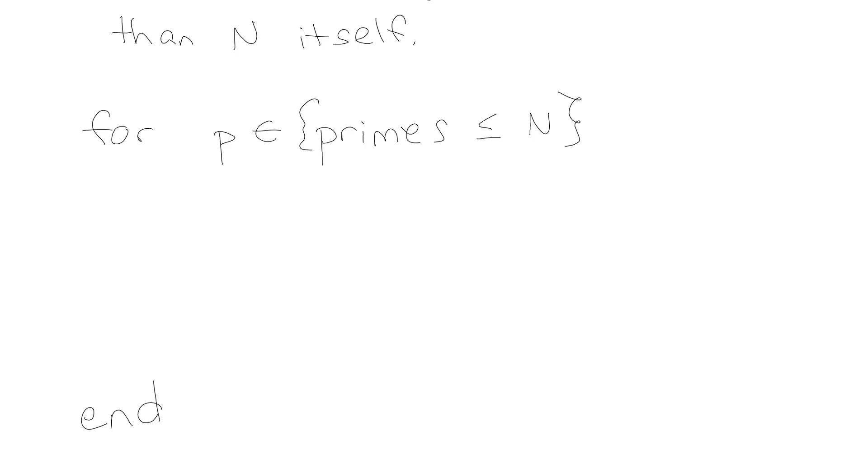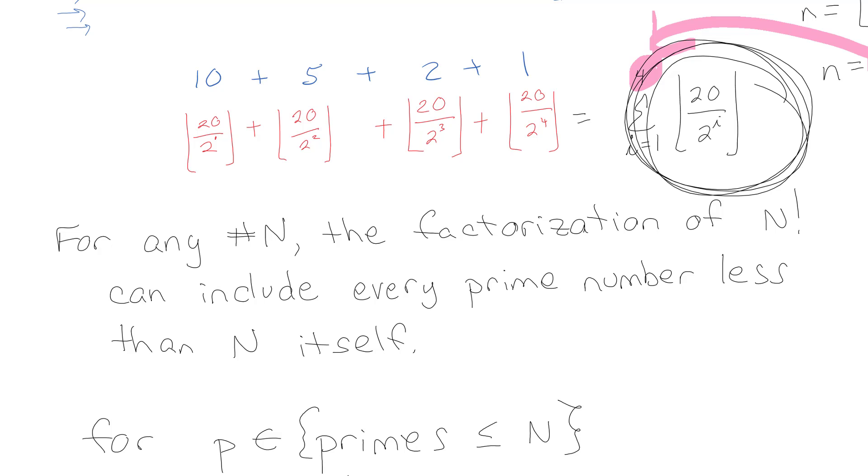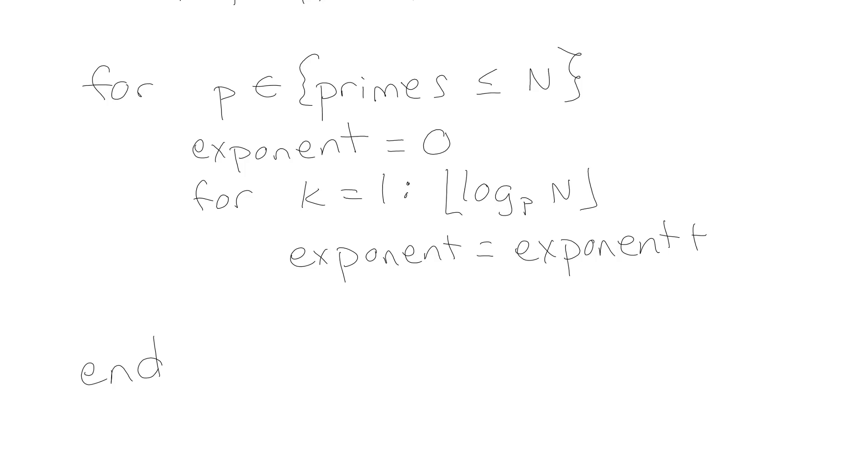And then within that I'm going to get the exponent for each one of those primes. So the exponent of this particular p, whatever one I'm looking on, I'm going to start it off at zero. And then for some k going from one to the floor of log base prime of n, the exponent is going to be the previous value plus n divided by the prime to that power, the floor of it, plus n divided by p to the k and take the floor of that. And then you need to store that somewhere so that we can eventually get the full prime factorization of it. So that's kind of our pseudocode. Now our next goal is to go and put this into MATLAB and see what we can do with it.